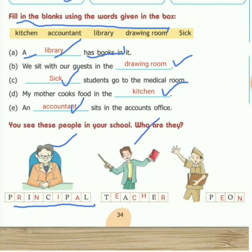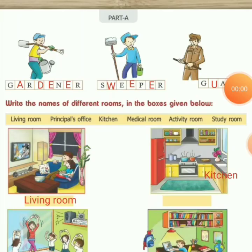Next is a teacher. It does not mean a teacher will always be female — here is a male teacher. The spelling is T-E-A-C-H-E-R. Next is a peon. The spelling of peon is P-E-O-N. Then this picture is of a gardener. The spelling of gardener is G-A-R-D-E-N-E-R.